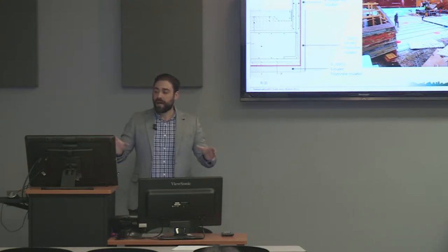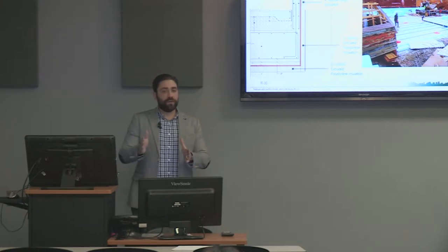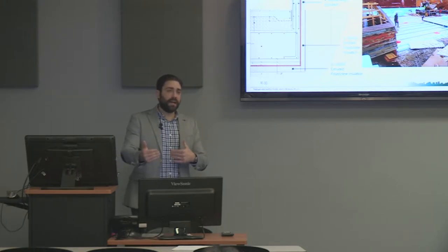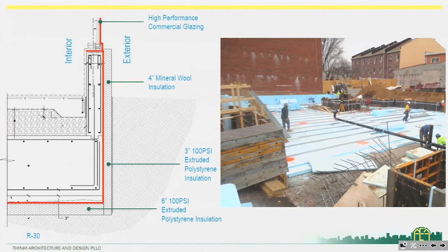In certain areas of the building we achieved the full six inches; in other areas where we had lot lines or existing conditions, we maintained a minimum of three inches. That insulation comes up and meets the exterior wall assembly, which comes down and sits on top of the insulation layer. This gives us continuity between the sub-slab insulation, up the side of the slab, and meeting the wall assembly as it comes down.